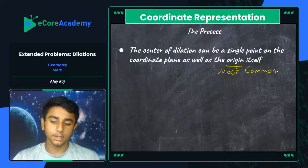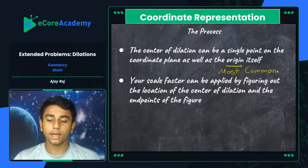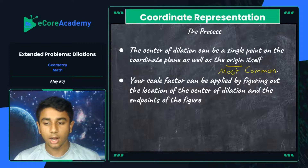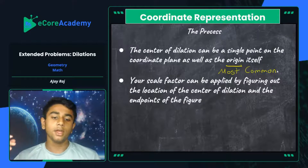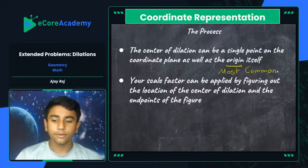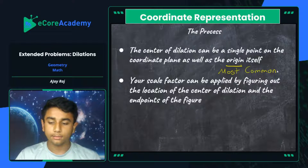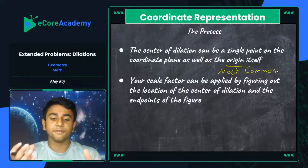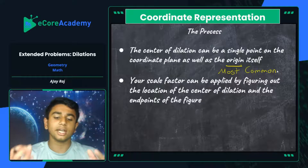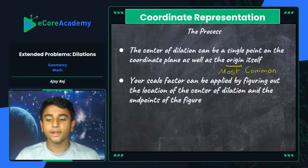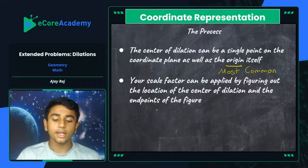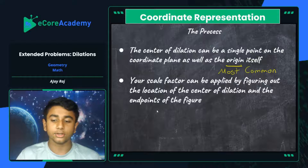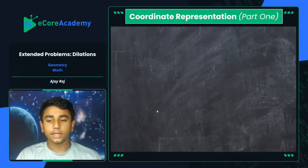The scale factor can be applied by figuring out the location of the center of dilation and the endpoints of the figure. The center of dilation will be given to you in a problem — you cannot calculate it on your own because it is relative to what the problem is conveying. However, the scale factor can always be calculated once you're given a figure and its image. Once you've established those, you can conduct your dilation smoothly on the coordinate plane.